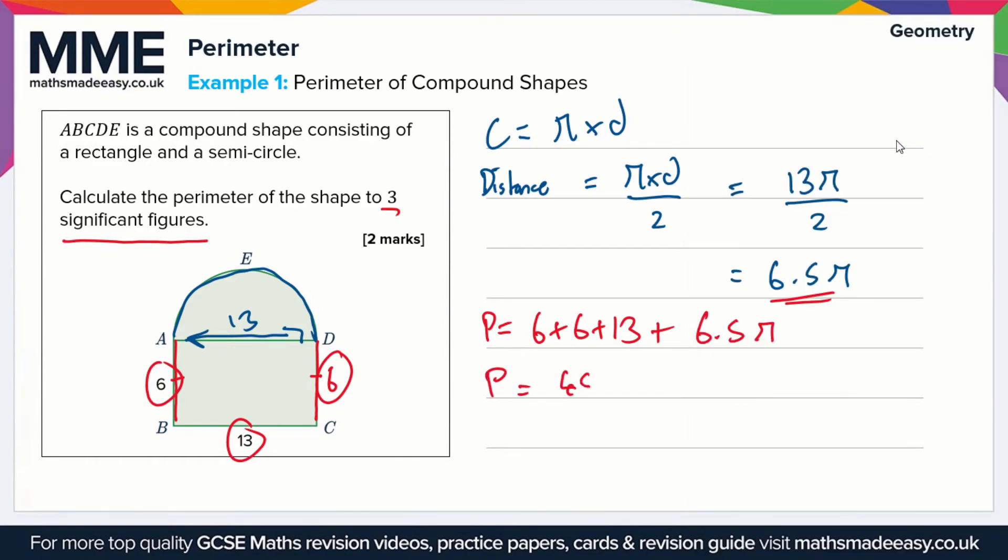That gives us 45.4 to 3 significant figures as the question asks. So P equals 45.4. Again, we're not given any units, so we'll just leave our answer as it is.